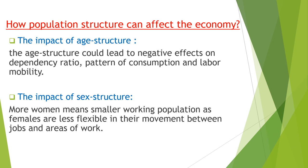How population structure can affect the economy involves two types. The first is the impact of age structure, which can lead to negative effects. When we have a higher dependency ratio, patterns of consumption and labor mobility are affected by the age structure. When we have more aging population, we have more negative effects on the economy. The second is the impact of sex structure: when we have more women, it means a smaller working population as females are less flexible in their movement between jobs and areas of work.